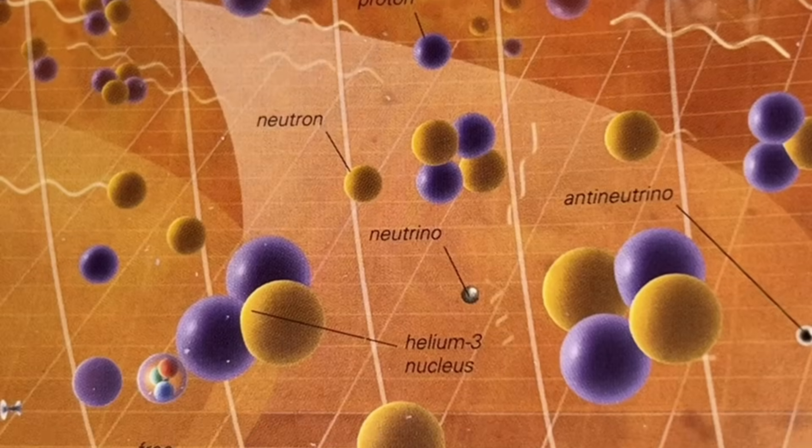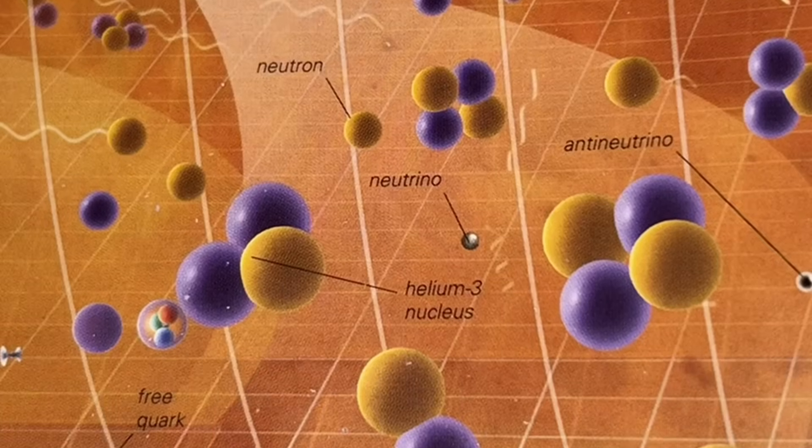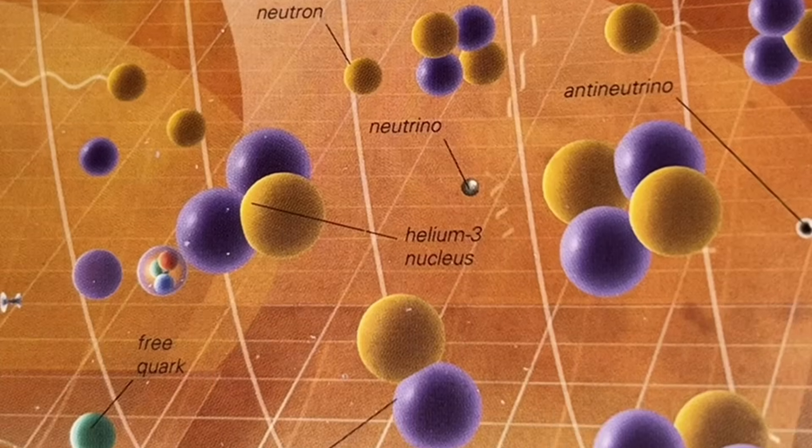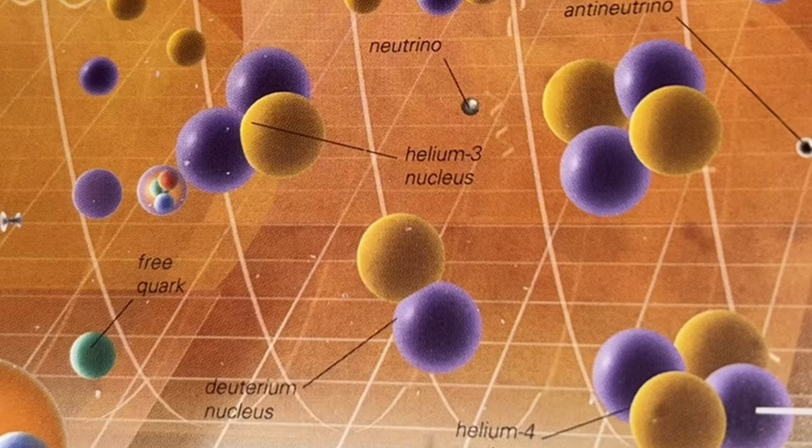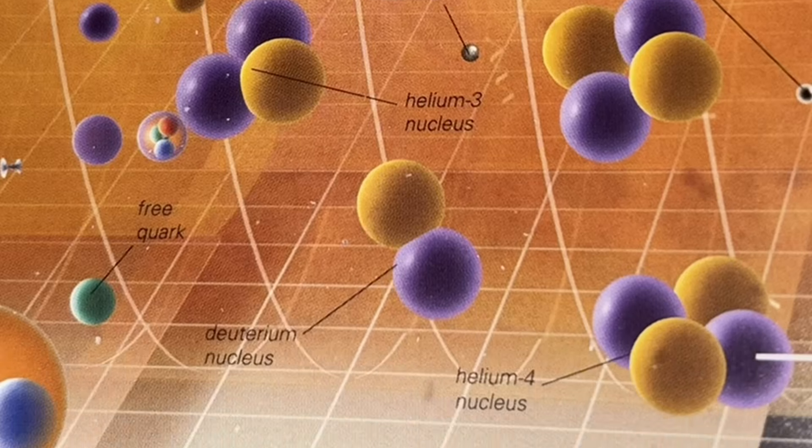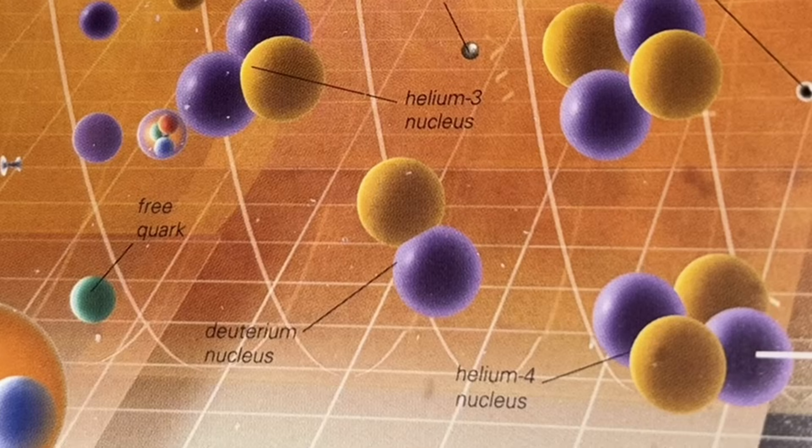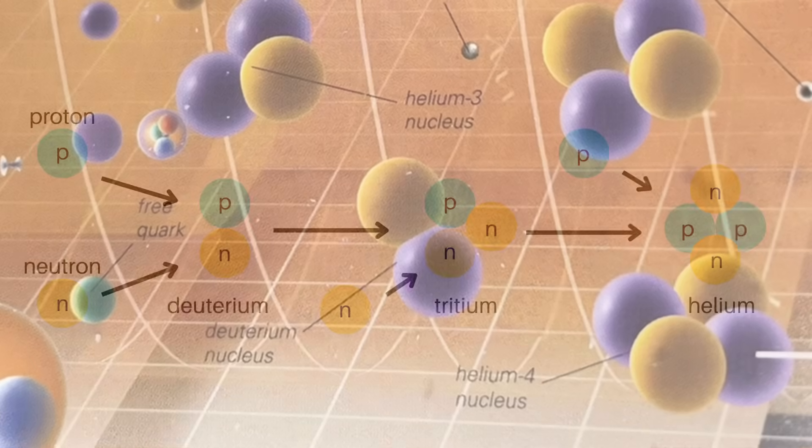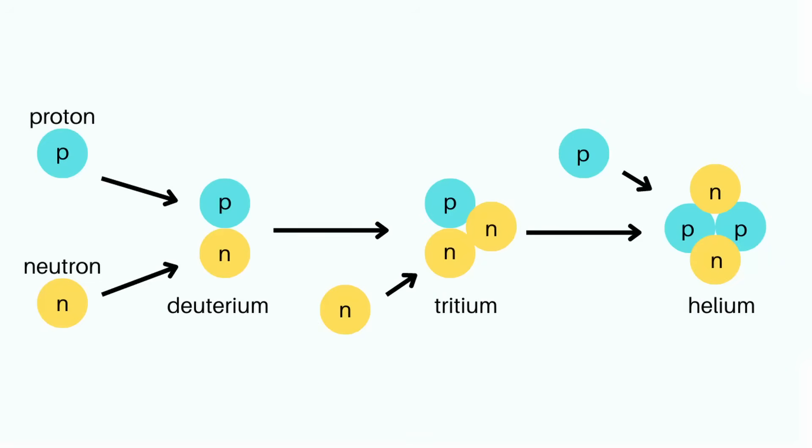One second after the Big Bang, the nucleosynthesis era began. The observable universe during this era was still around 600 billion miles in diameter, like the lepton era, but the temperature still cooled down further to 18 billion degrees Fahrenheit. Neutrons gradually converted into protons as the universe cooled, but when there was about one neutron for every seven protons, most remaining neutrons combined with protons to make helium nuclei, of which each consisted of two protons and two neutrons.